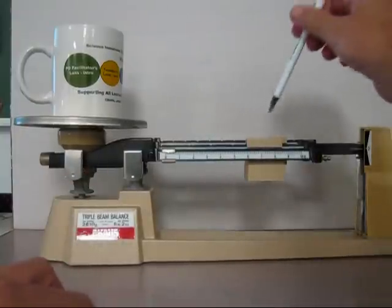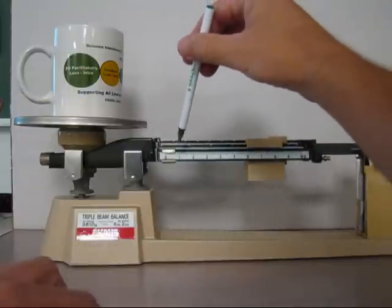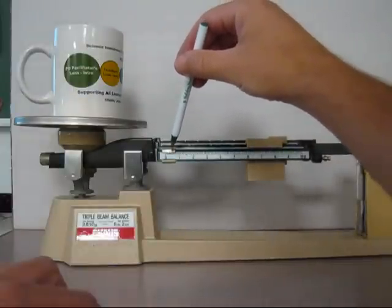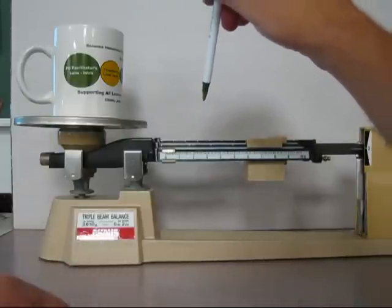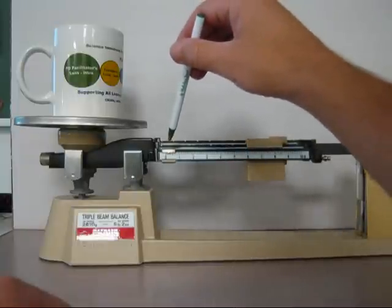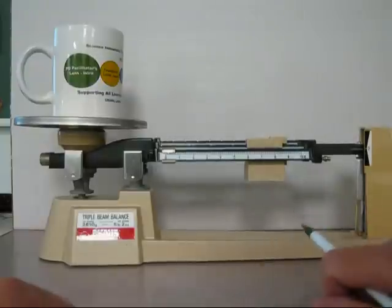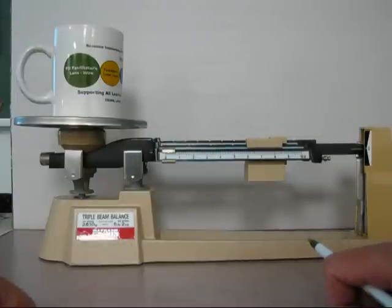So now I need to read it. I've got four hundred, ninety, zero, but there's a bunch of little marks between zero and one. Those go after the decimal point. Four hundred and ninety point two is what that says. So, my mug, with however much coffee is in there now, has a mass of four hundred and ninety point two grams.